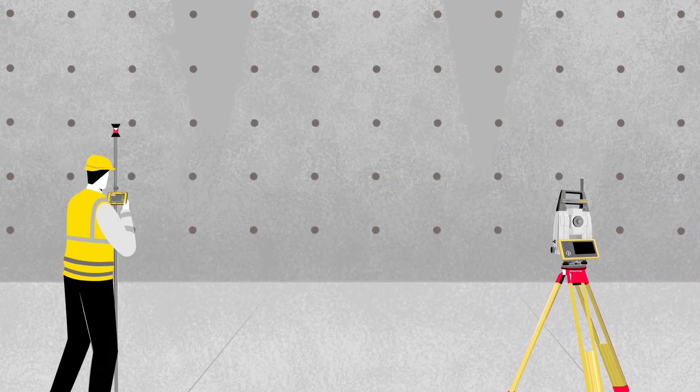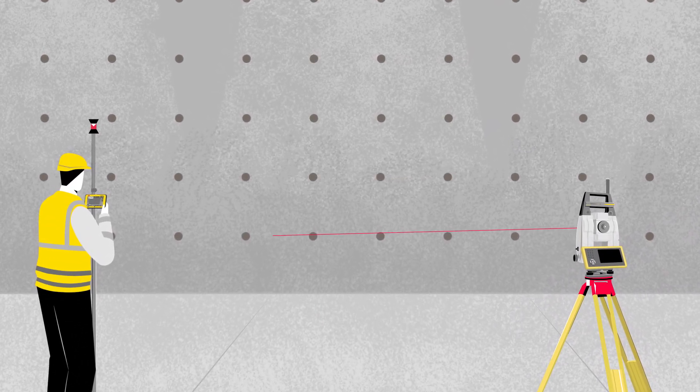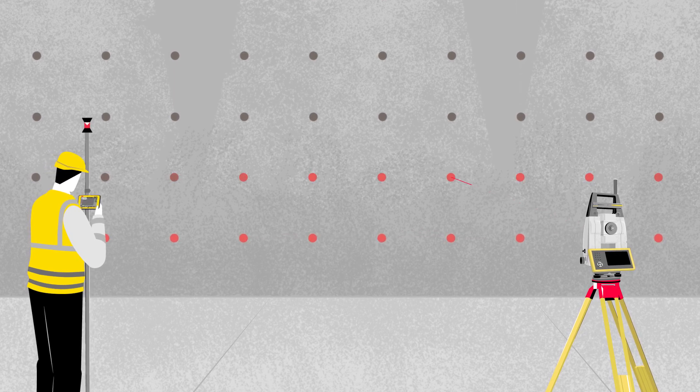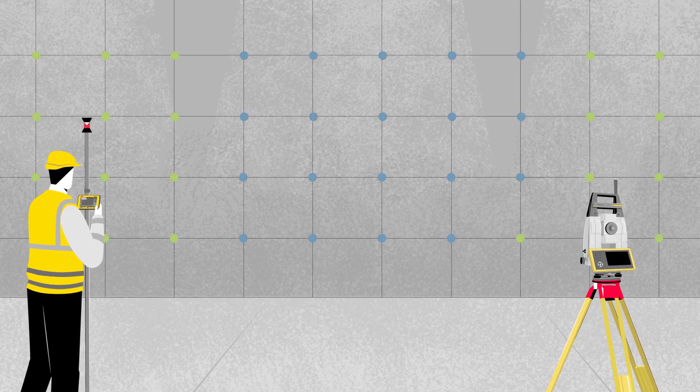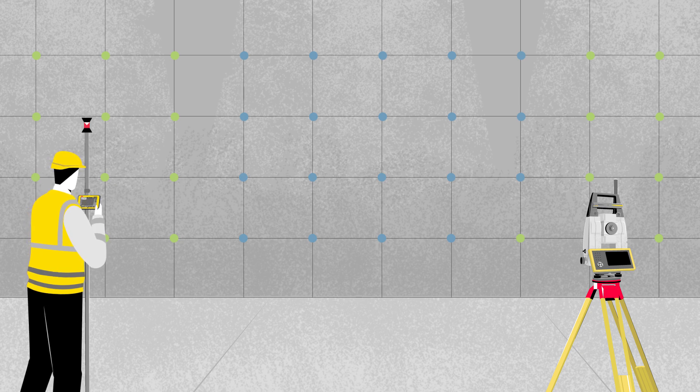Using any Leica Geosystems robotic instrument like the Icon ICR-80, our customers can also verify other objects such as walls and columns with laser point measurements.